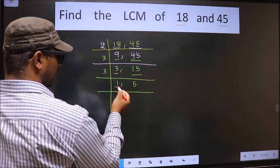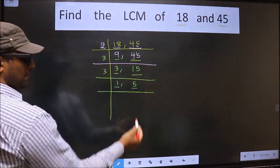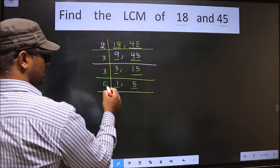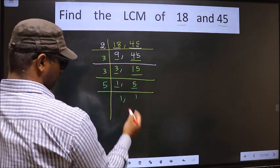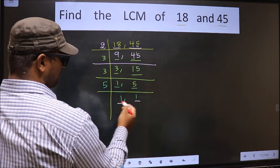We got 1 here. So focus on the other number, that is 5. 5 is a prime number, so 5 × 1 = 5. We got 1 in both places.